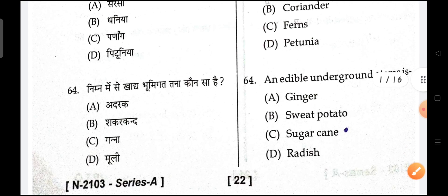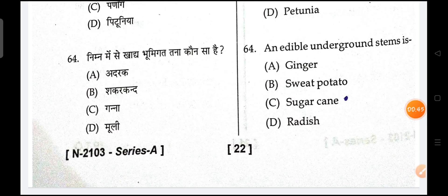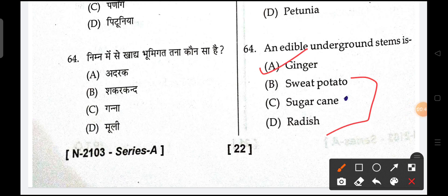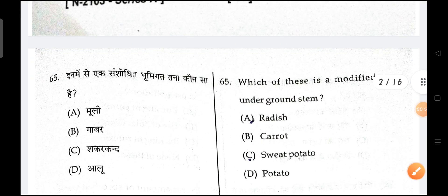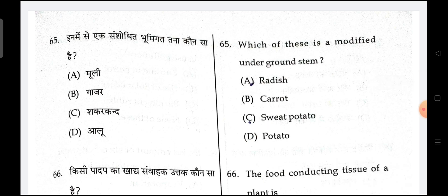Next is, an edible underground stem — the correct answer is ginger. Next is, which of these is a modified underground stem? Potatoes is the correct answer.